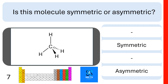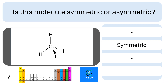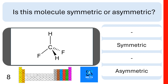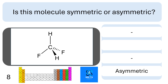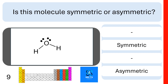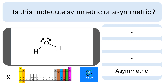Question 7. Is this molecule symmetric or asymmetric? This molecule has multiple planes of symmetry — it is symmetric. Question 8. Is this molecule asymmetric or symmetric? When we're working out whether a molecule is polar or not, we say this molecule is asymmetric. Question 9. Is this molecule symmetric or asymmetric? This molecule is asymmetric when we're working out the polarity of a molecule.